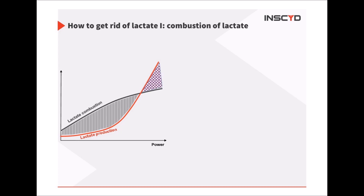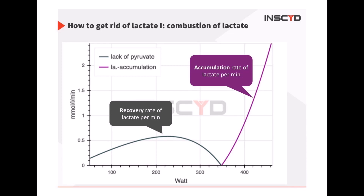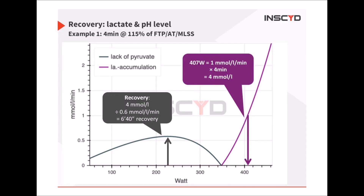It's very helpful to look at two different parts of this curve. The gray area shows basically how much additional lactate the athlete could combust. The easiest way to work with that is to transform it into another graph showing the recovery of lactate below threshold and the accumulation rate of lactate above threshold. This recovery rate is what you can use to decide on the recovery phase — how long and at what power output or running speed.